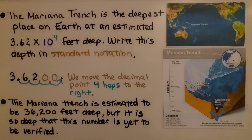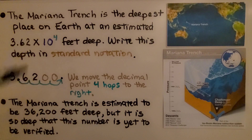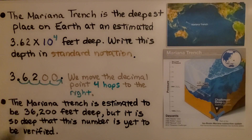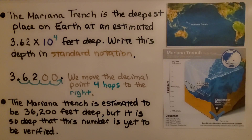The Mariana Trench is the deepest place on Earth at an estimated 3.62 times 10 raised to the fourth power feet deep. Write this depth in standard notation. We have a positive exponent, so we move the decimal point four hops to the right — 1, 2, 3, 4. The Mariana Trench is estimated to be 36,200 feet deep, but it's so deep that this number is yet to be verified.